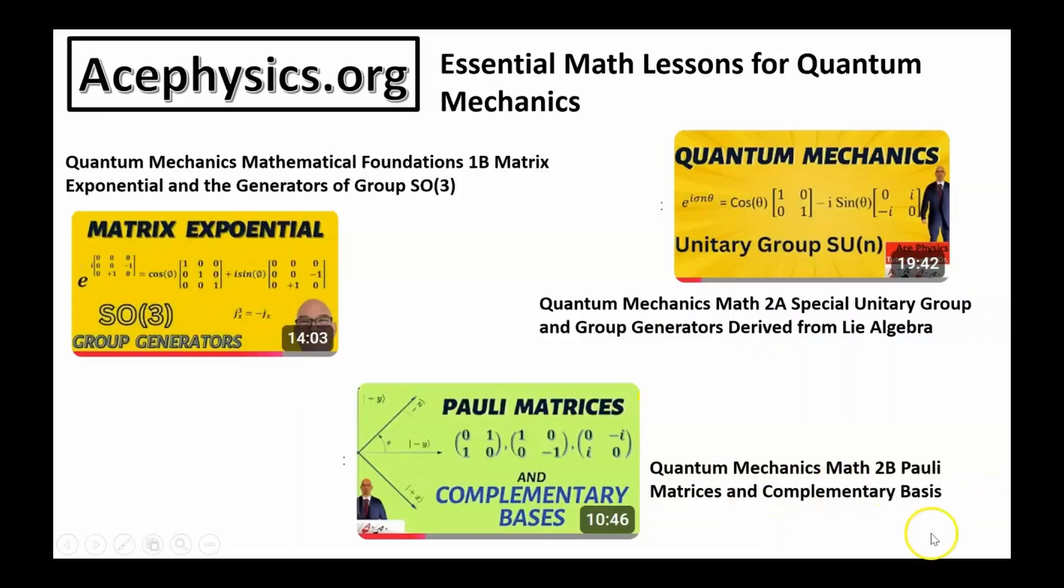Lesson 2b, Pauli matrices and complementary basis. A lesson on non-commuting observables and the mathematical structure of quantum logic and measurement.